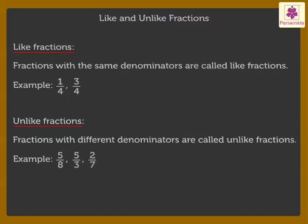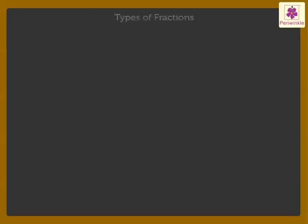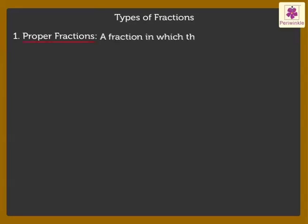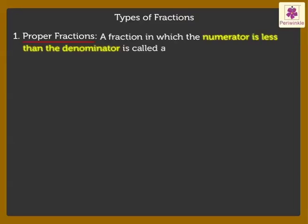Now let us revise the types of fractions. 1. Proper Fractions: A fraction in which the numerator is less than the denominator is called a proper fraction. For example, 2 is less than 8. Thus, we say that 2 eighth is a proper fraction.